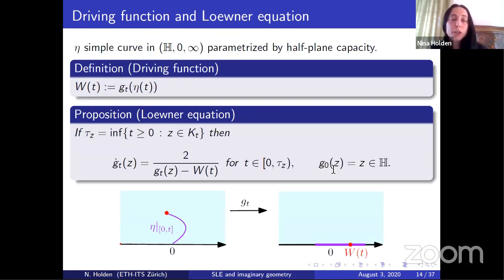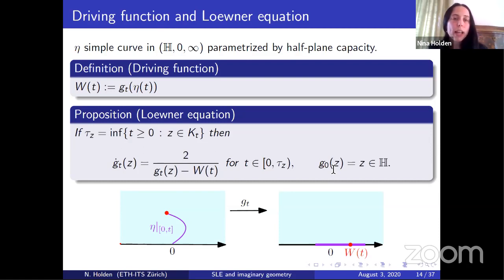In the next slide, I will introduce two very important objects. The first object is what I call the driving function. I will also assume, just for simplicity, that η is a simple curve, but much of what I'm saying also works for more general curves. When the curve is simple, it's possible to argue that when we apply the map g_t, the tip of the curve is mapped to a unique point on the real line. We denote this point by W(t), and it turns out that W(t) is a continuous function of t.